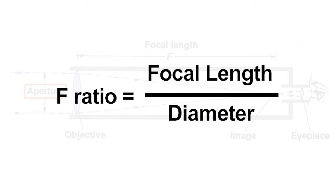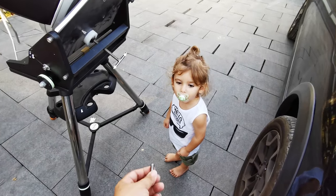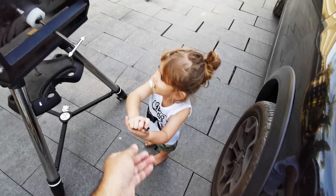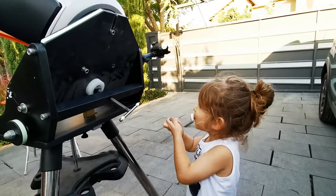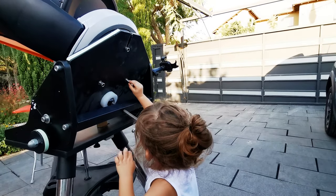We can combine both these features into one feature called the F ratio of the scope, which is just the focal length divided by the diameter. Larger F values means less light gathered — a slower scope. Smaller F values means more light and a faster scope.